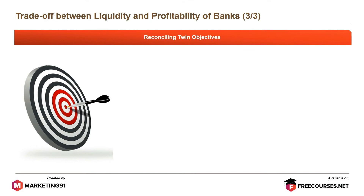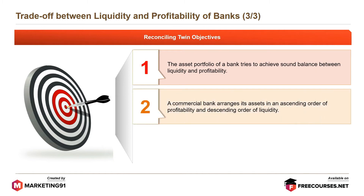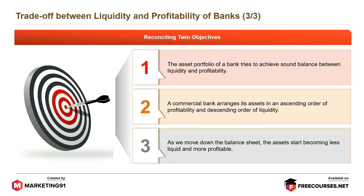The best way to maintain liquidity versus profitability is reconciling twin objectives. The asset portfolio of a bank tries to achieve a sound balance between liquidity and profitability. A commercial bank arranges its assets in an ascending order of profitability and descending order of liquidity. As we move down the balance sheet, the assets start becoming less liquid and more profitable.